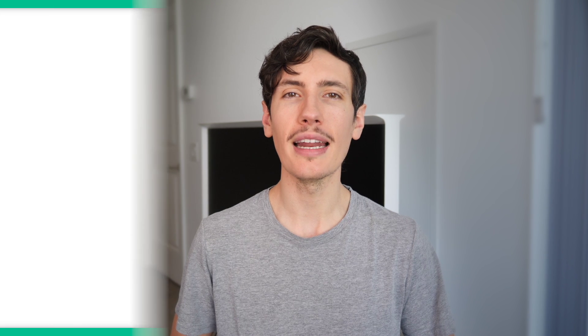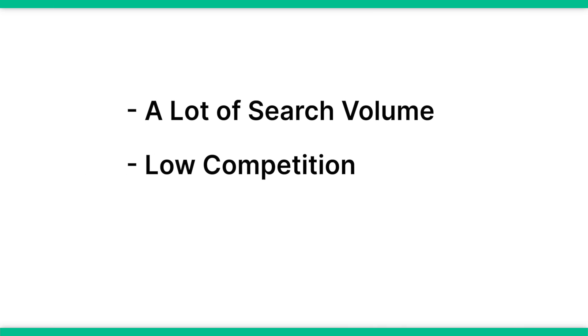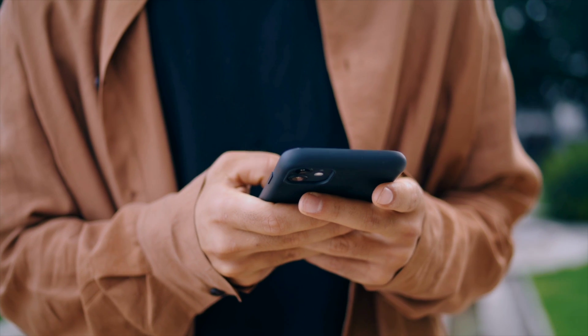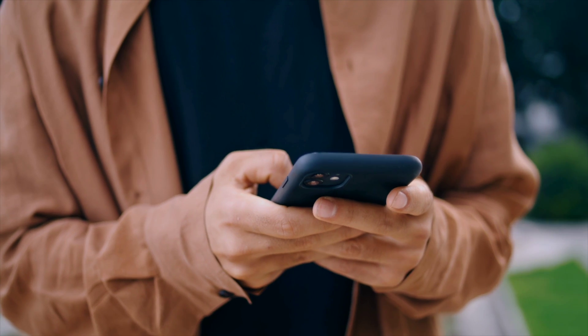You'll want to take some time to do keyword research and find the best keywords to prioritize. You're looking for search terms that have a lot of search volume, have relatively low competition, and are relevant to your app. The best keywords are those that describe exactly what your app does or the problem it solves. Put your most important keywords in your title, followed by putting them prominently in your app description.